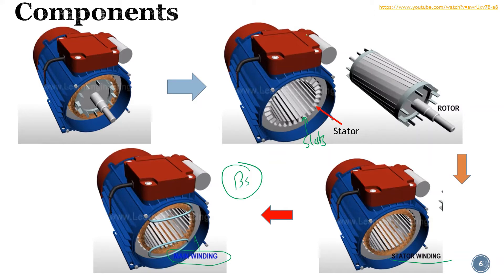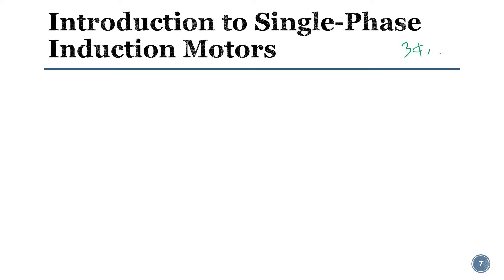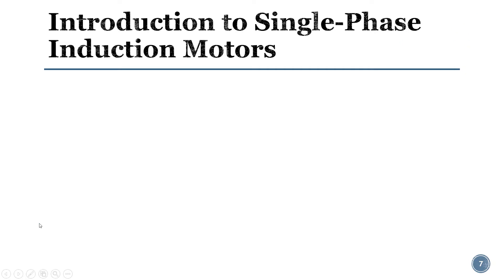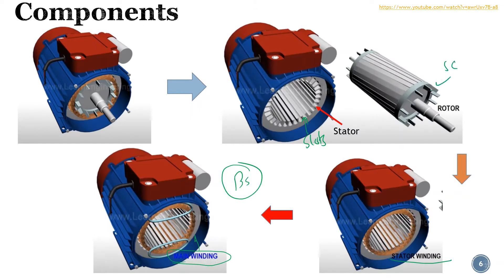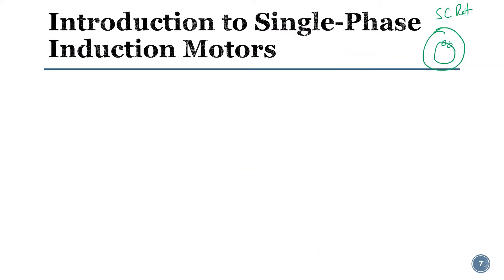There are certain issues with the single phase induction motor. In the three phase case, we get a rotating magnetic field. Due to this rotating magnetic field we get torque, and due to the torque the rotor rotates. But in the single phase induction motor case — let me draw the simplified case — we usually have a squirrel cage rotor with rotor bars.